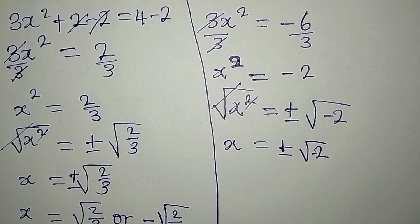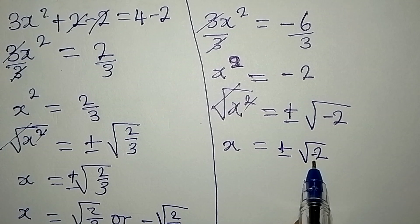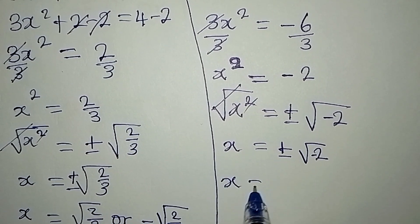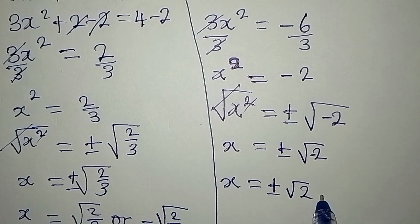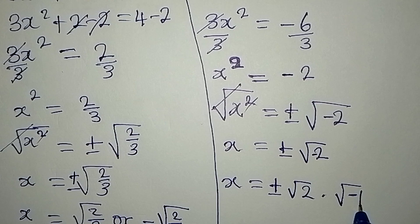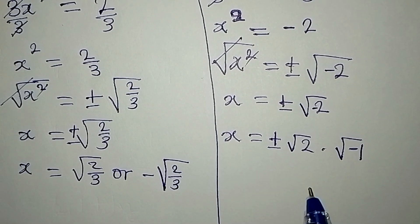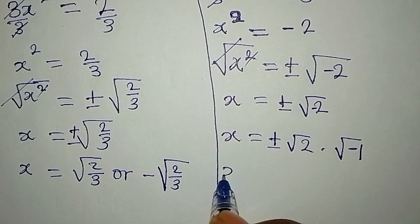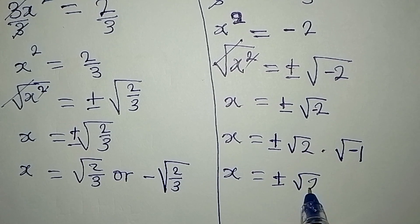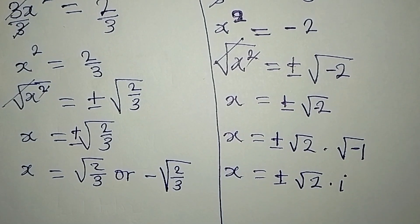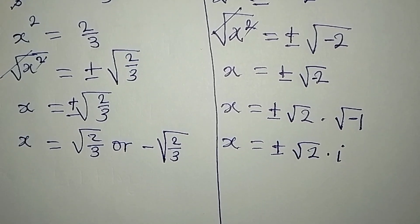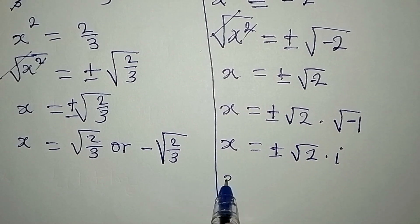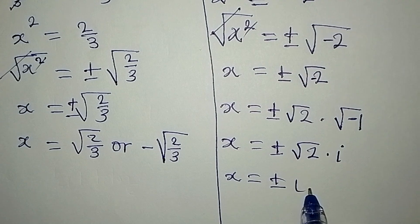Mind you, you cannot use your calculator to get the square root of negative 2 because of the negative. So we rewrite: x equals plus or minus square root of 2 multiplied by square root of negative 1. Remember that square root of negative 1 is defined as i, the imaginary unit. So x equals plus or minus i root 2.